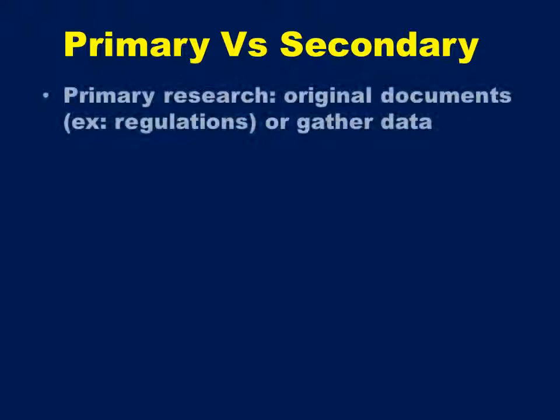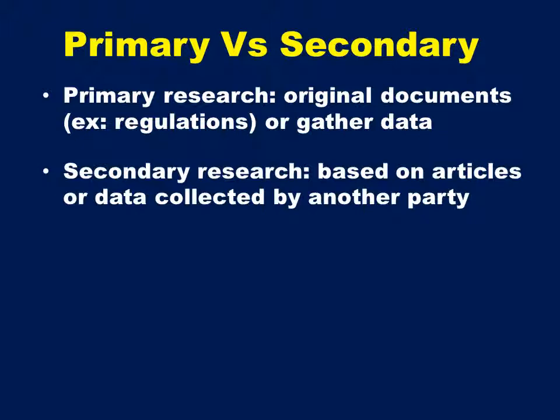Primary research is performed by the researcher, like looking at original documents such as customer complaint forms or directly gathering the data for the research. Secondary research is looking at articles or data gathered by someone else. One major source of secondary research comes from national rating services.